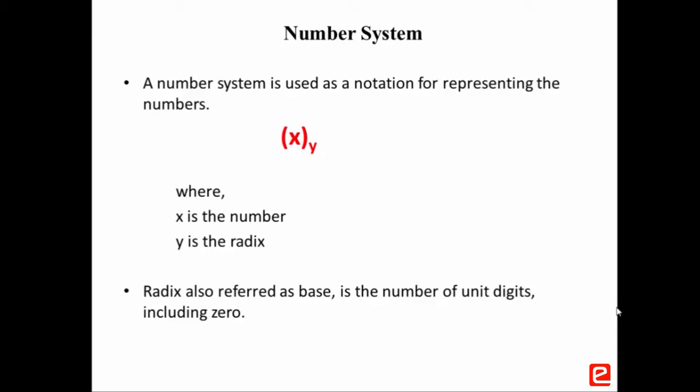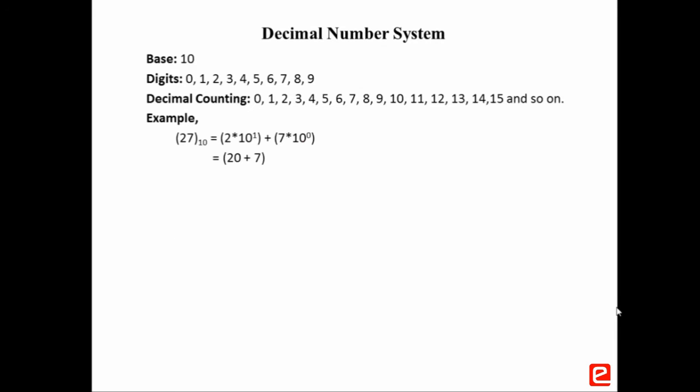Depending upon the value of y, we have different types of number systems. First is the decimal number system, which is also known as the base 10 system. It is the way most human beings represent numbers. In this system, the digits or valid values are 0 to 9. Decimal counting starts from 0, 1, 2, 3, and so on.